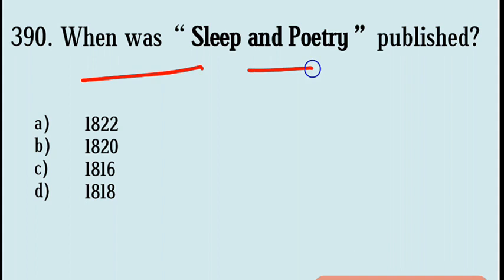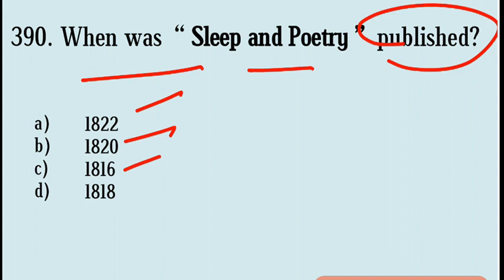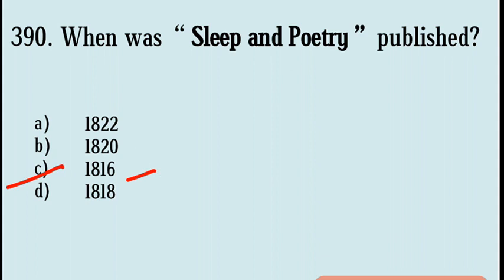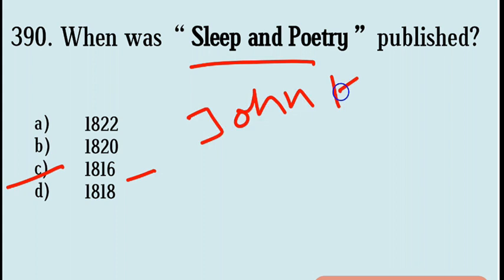It was later published in poem form in 1817 as part of Keats's first collection. Next question: When was Sleep and Poetry published? Options are 1822, 1820, 1816, 1818. Correct answer: Option C, 1816. Sleep and Poetry was written by John Keats. He distinguishes poetry from mere sleep and dream.